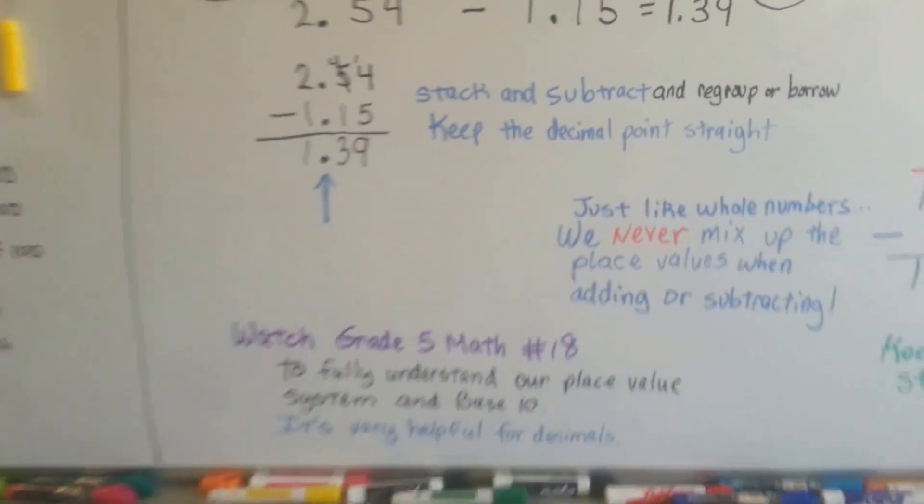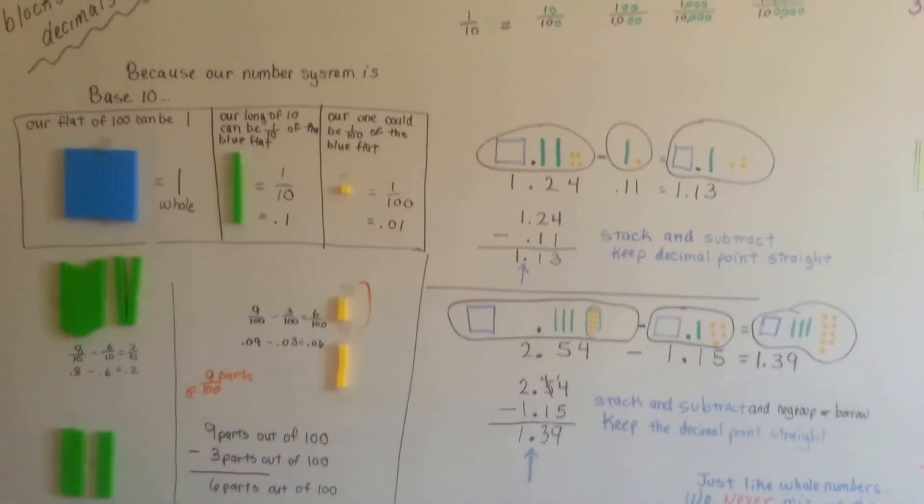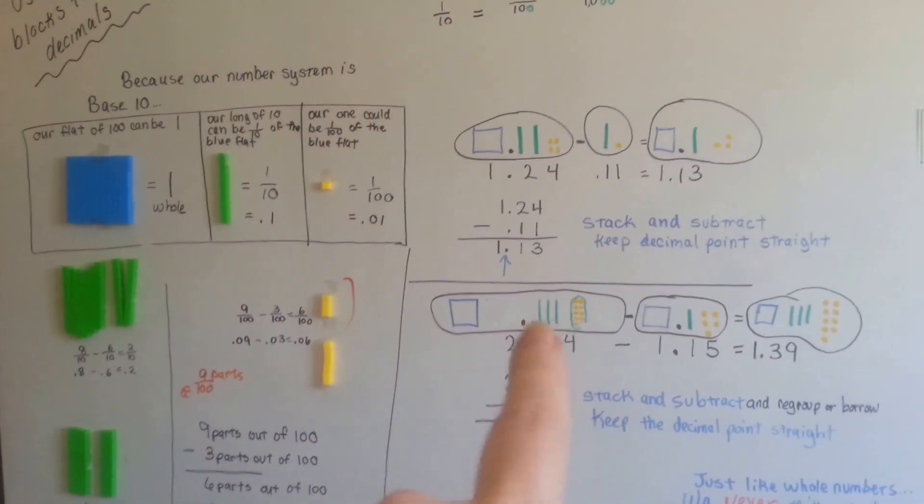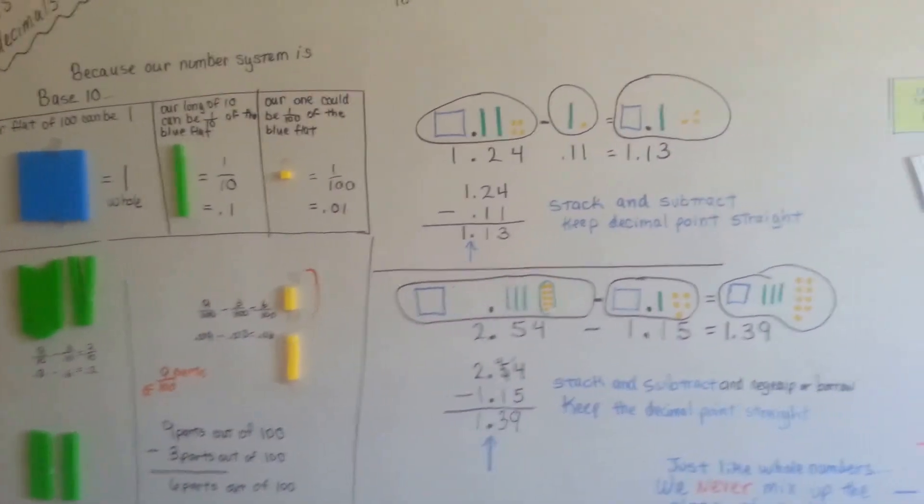This is how you subtract decimals and this is how you can use these models and manipulatives to help you subtract decimals. Replace a bar for ten singles to help you so you can regroup.